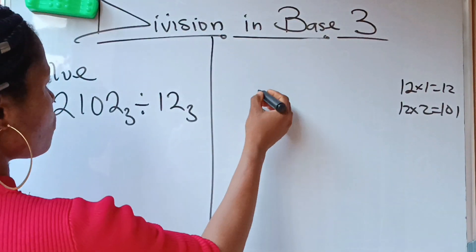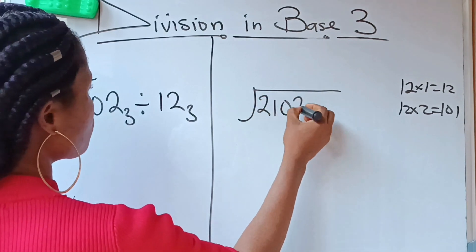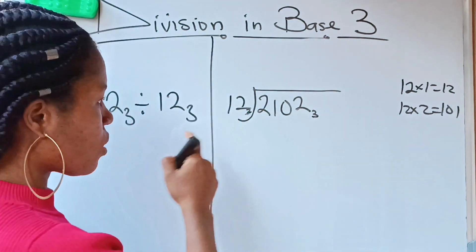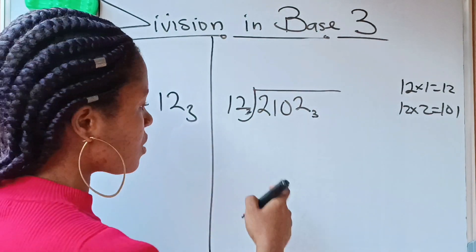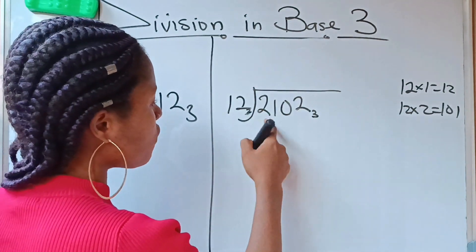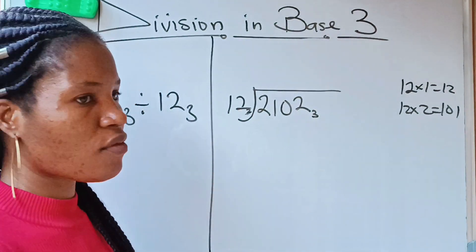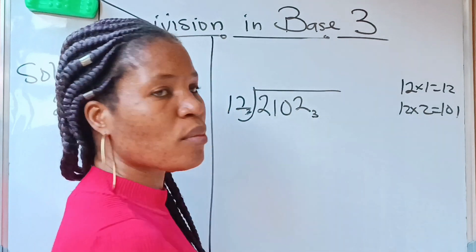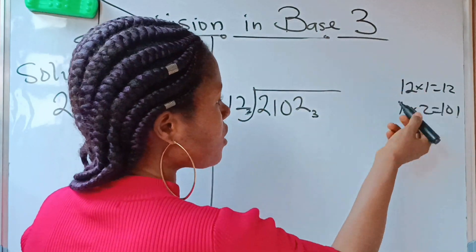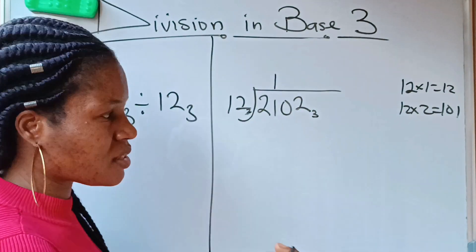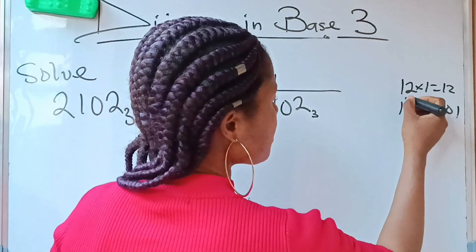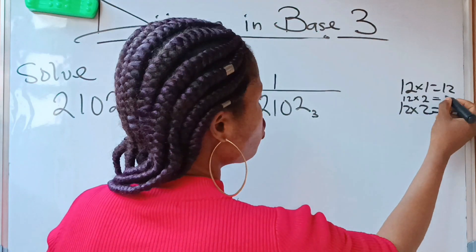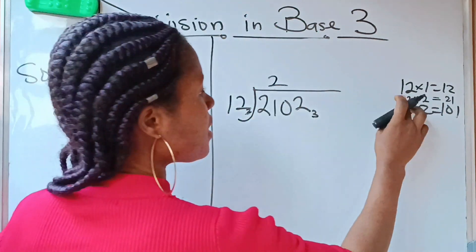We have 2102 in base 3 being divided by 12 in base 3. Let's start: 12 divides 2 — that's not possible, so we leave it. Now 12 divides 21. Notice that 21 is not in our times table; the next entry times 2 gives 101, which is way more than 21. So it is going to be times 1, giving us 12.